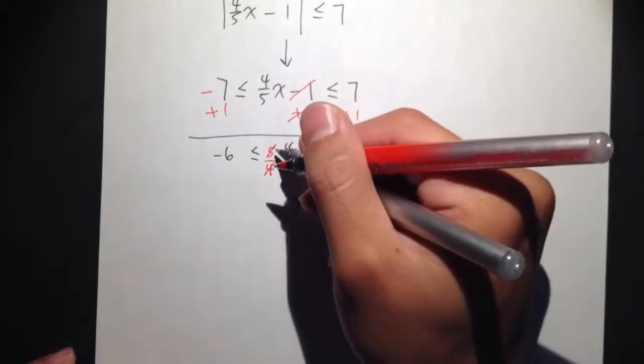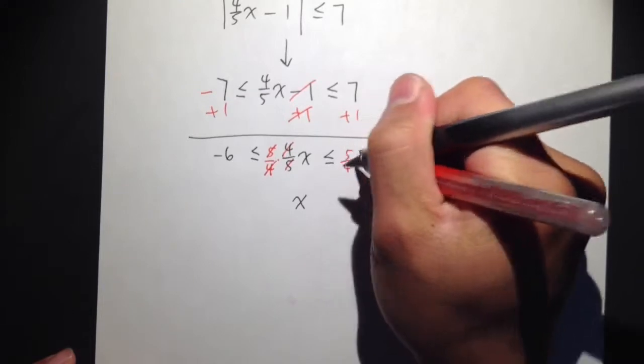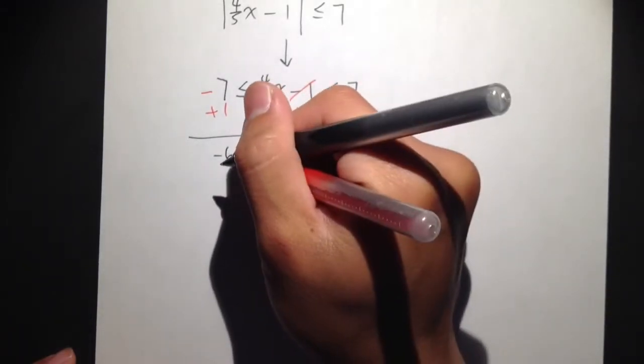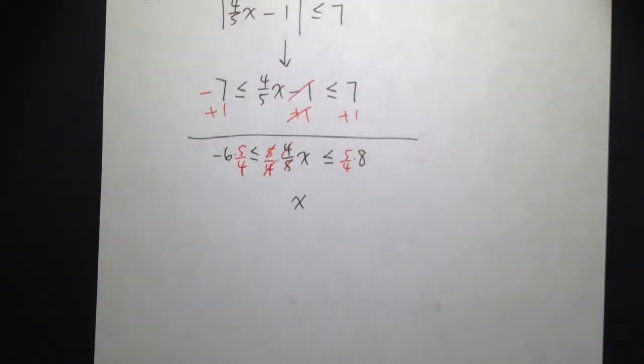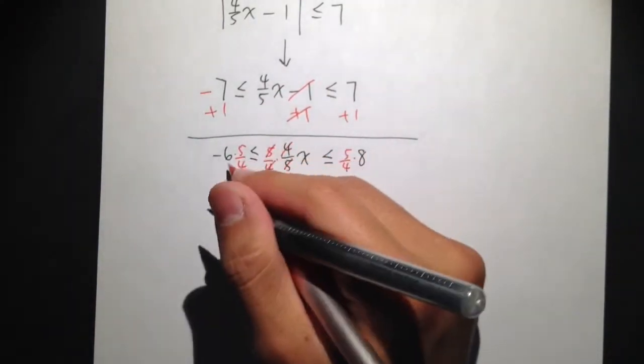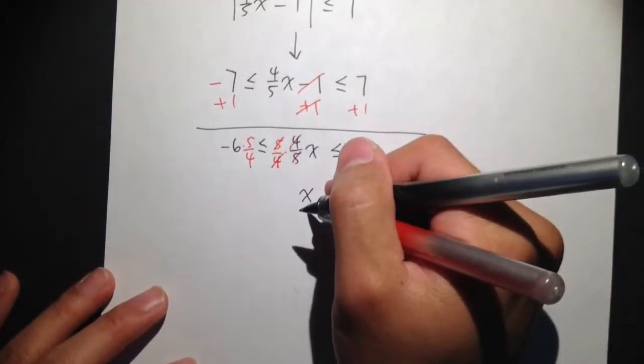But then we also have to make sure we multiply by 5 over 4 right here, multiply by 5 over 4 here, and also multiply by 5 over 4 here. It doesn't matter if you're putting it in front or putting it back, depends on whichever is more convenient. Alright, so x is in the middle.